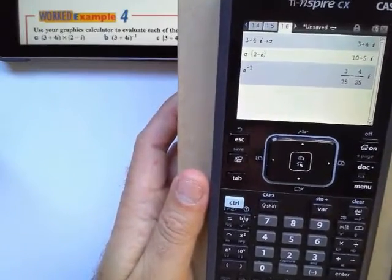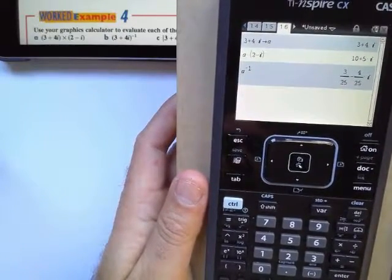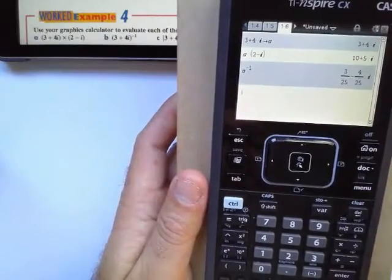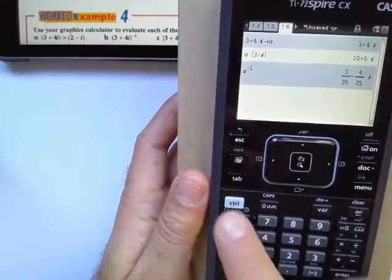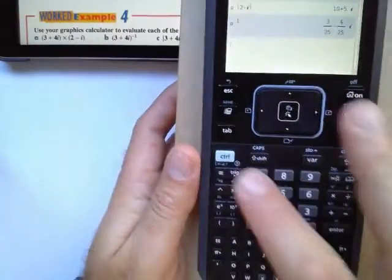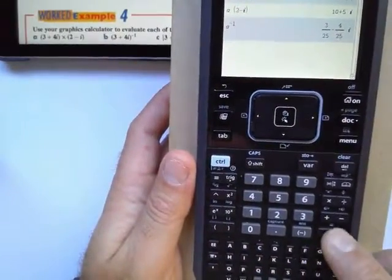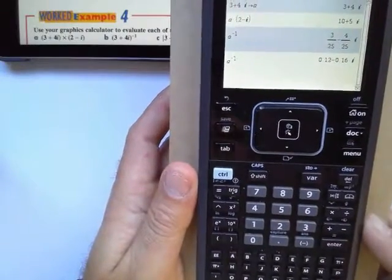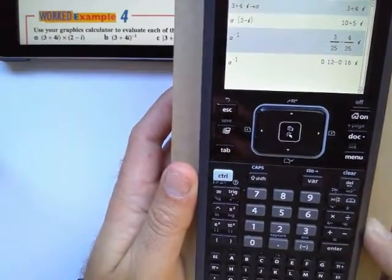And my answer is 3 over 25 minus 4i over 25. Remember that is the exact value. If you want to find the decimal value, I'm just going to say control enter. And my answer is 0.12 minus 0.16i.